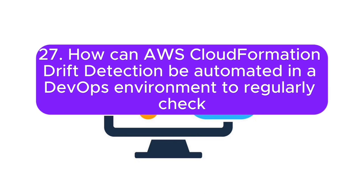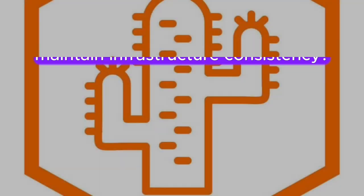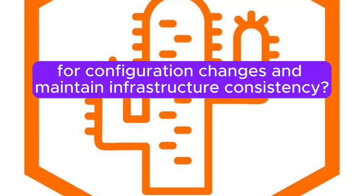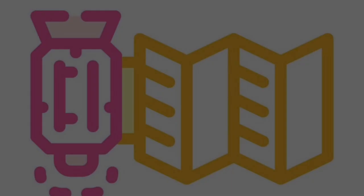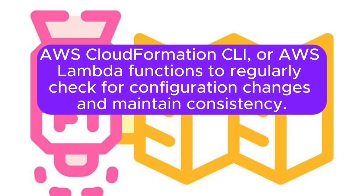Question 27: How can AWS CloudFormation drift detection be automated in a DevOps environment to regularly check for configuration changes and maintain infrastructure consistency? Answer: DevOps can automate drift detection by using AWS SDKs, AWS CloudFormation CLI, or AWS Lambda functions to regularly check for configuration changes and maintain consistency.